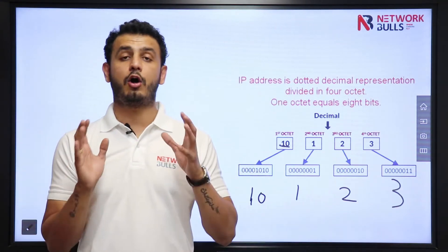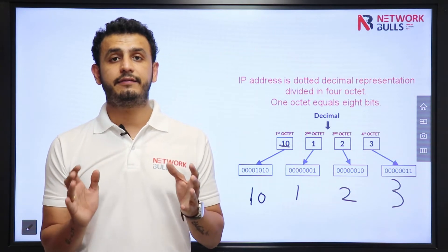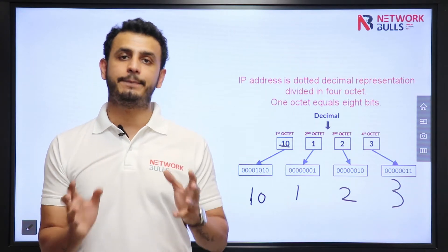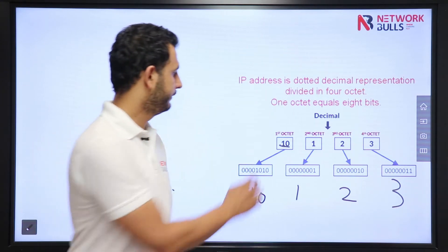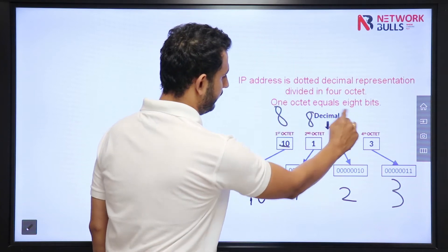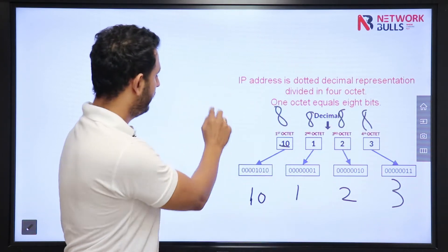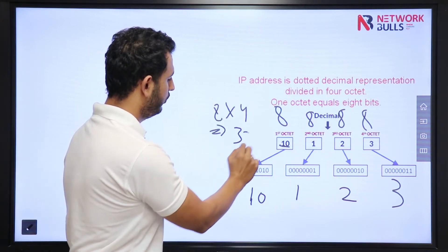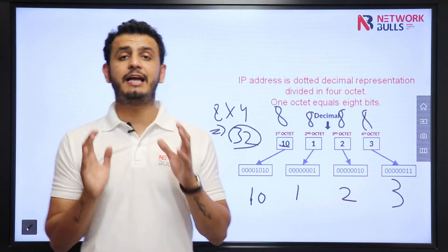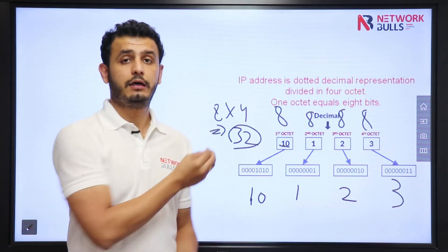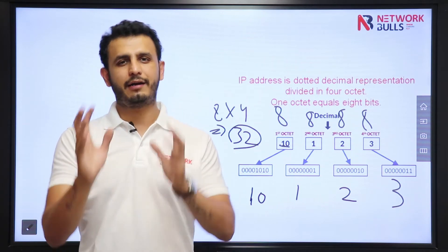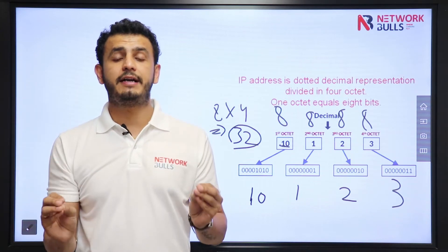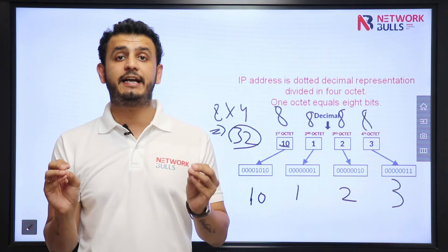Now you want to know what is an octet. Octet means we have in total 8 bits. So every octet of IP address will have 8 bits — 8, 8, 8, 8. So 8 into 4 equals 32. It means in total in an IP address there will be 32 bits, which are divided into 4 octets which are separated by dots.